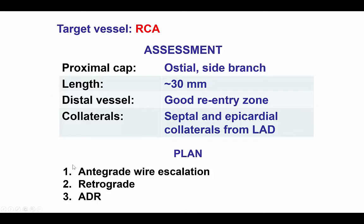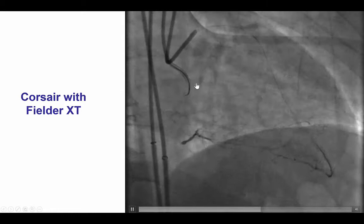Therefore, the plan was to start with antegrade wire escalation, and then if it didn't work, try retrograde crossing followed by antegrade dissection and re-entry.